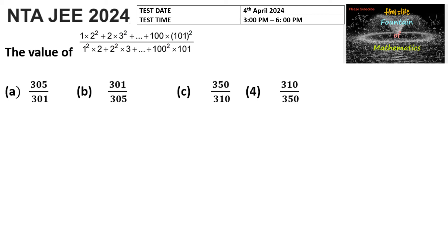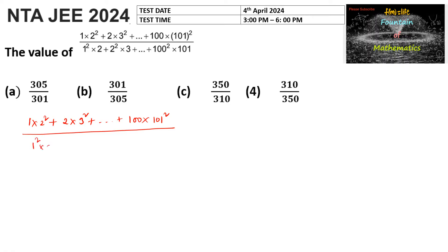The value of 1·2² + 2·3² + ... + 100·101² divided by 1²·2 + 2²·3 + ... + 100²·101.